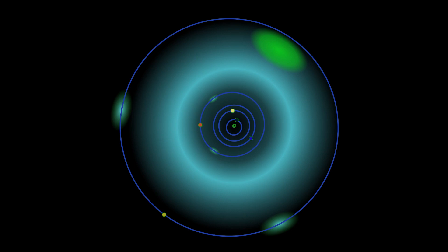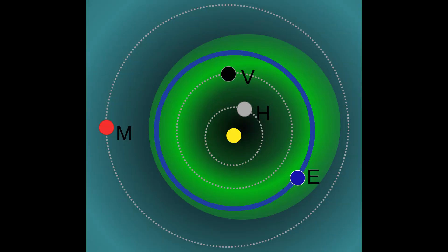The term minor planet has been used since the 19th century to describe these objects. The term planetoid has also been used, especially for larger planetary objects such as those the IAU has called dwarf planets since 2006.